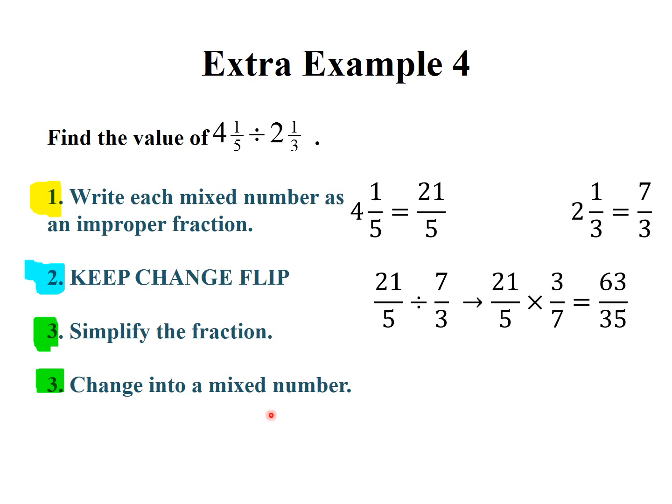21/5 divided by 7/3 is going to be changed into 21/5 times 3/7, and that's going to equal 63/35. Pause here, change it into the mixed number and see if you get it correct. Hopefully you got 1 and 4/5.